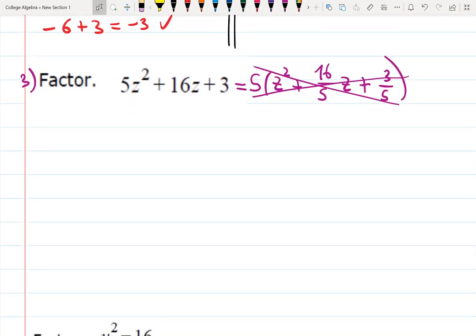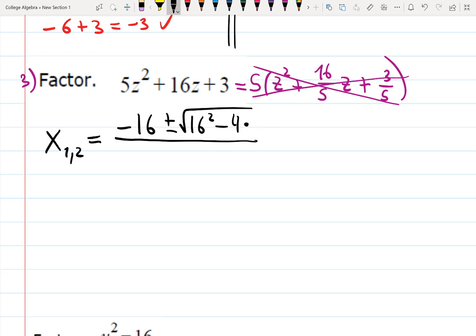So, quadratic formula tells me that I will have 2 roots, and it's going to be minus b, minus 16, plus minus, square root, b squared, minus 4, that's part of the formula, a, that's 5, c, that's 3, all over 2a, 2 times 5.